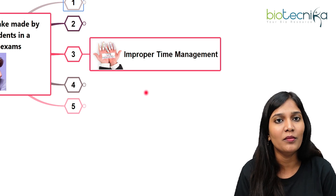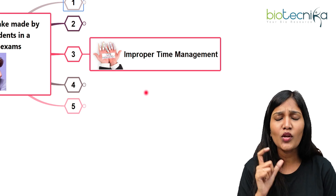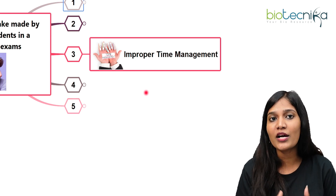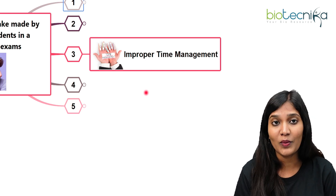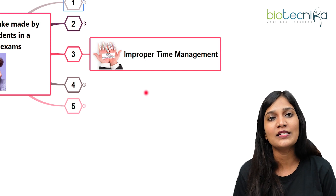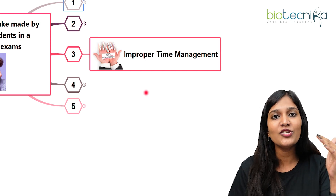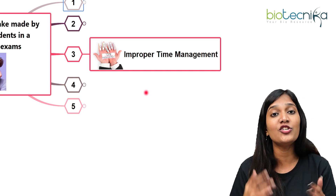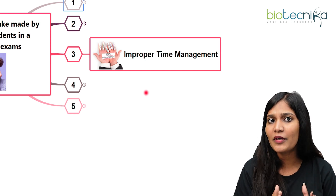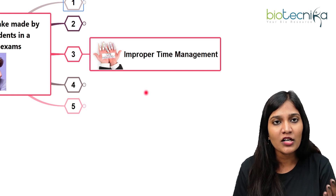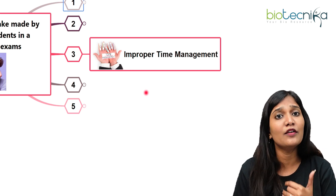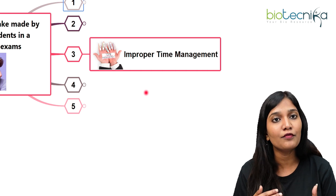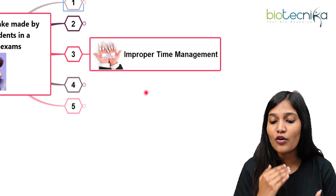To solve the time management problem, go for a lot of test series or mock tests within a stipulated period — two or three hours — so it gives you practice and makes you strategically approach questions instead of spending too much time on one. Initially, most people take a lot of time on the first five questions, then rush through the rest. For CSIR, strategize how much time you'll give for Part A, Part B, and Part C.